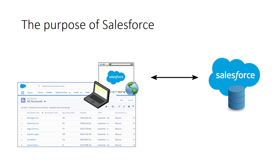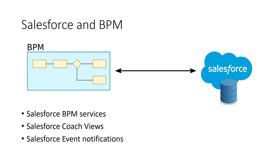I'm going to imagine that you have Salesforce deployed in your environment and you're also investigating BPM, or you have IBM's BPM. So let's think about what might be the interactions between IBM BPM and the Salesforce environment on the cloud. There are three areas we have identified and supported in our initial offering of the Salesforce toolkit: the Salesforce BPM services, a set of coach views, and the concept of event notification.